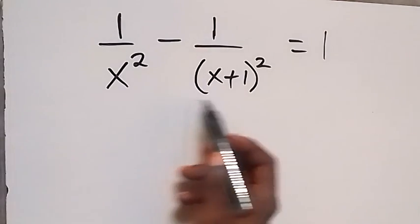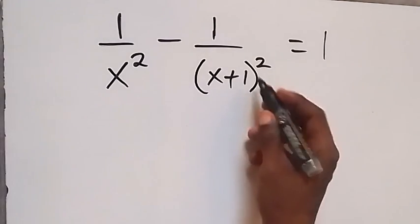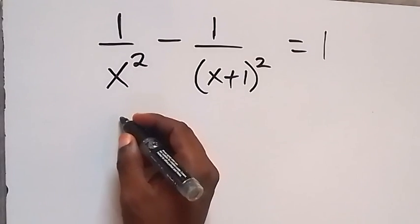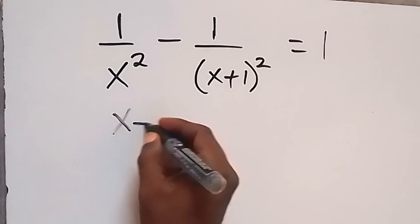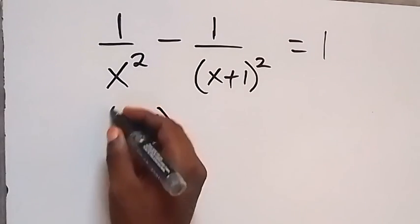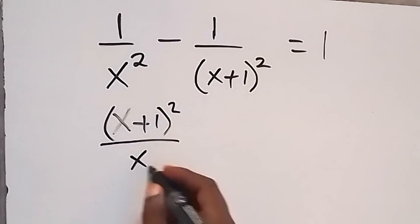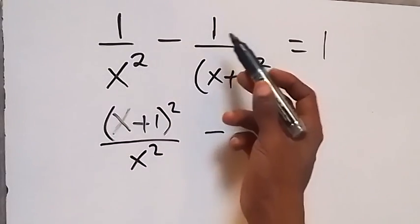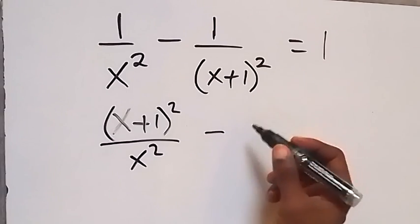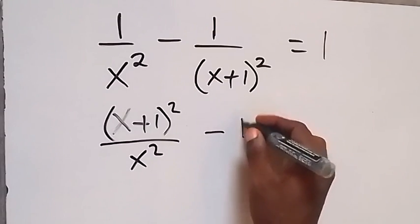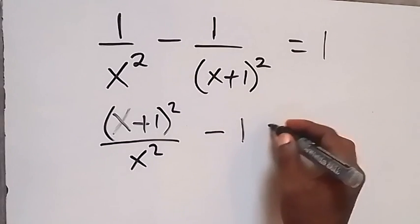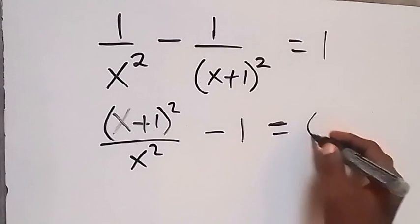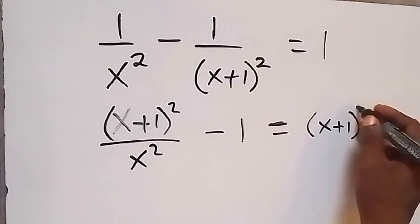From here, let's multiply through by x plus 1 raised to power 2. This first term will become x plus 1 raised to power 2 divided by x squared, then minus 1. When we multiply this term by x plus 1 raised to power 2, it will remain 1 because those will cancel each other. Then, on this side, we have x plus 1 raised to power 2.